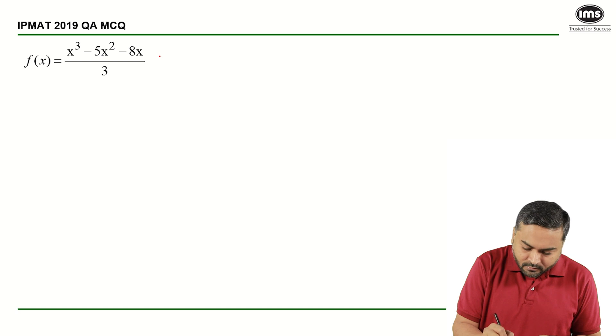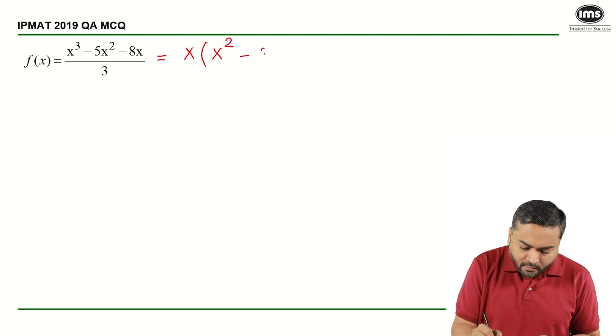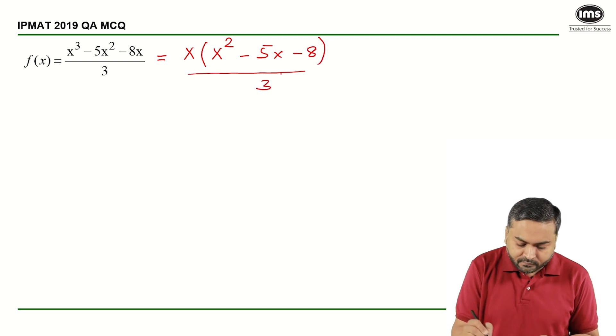Now what I can do is I can take x common from the numerator. So it will be x into x square minus 5x minus 8 whole upon 3, right?